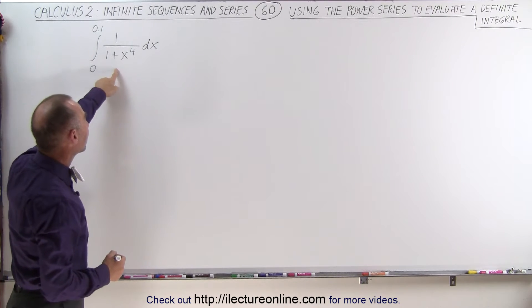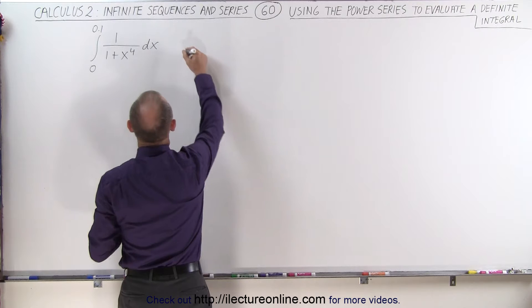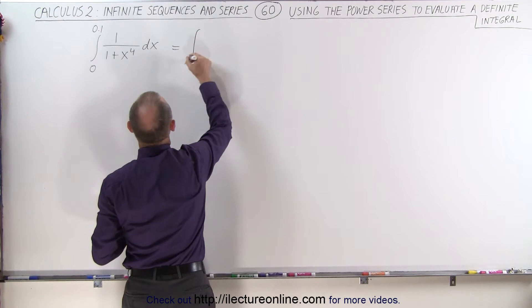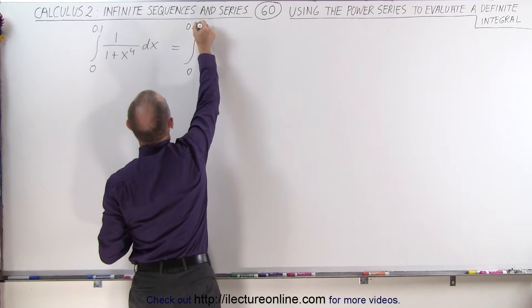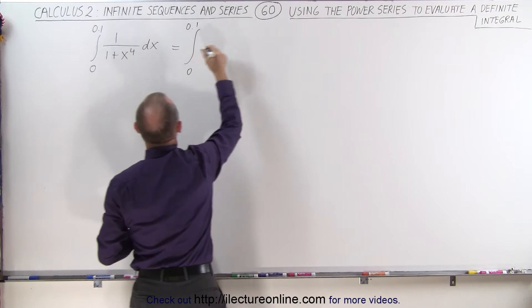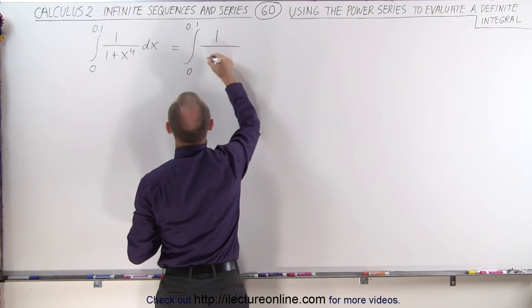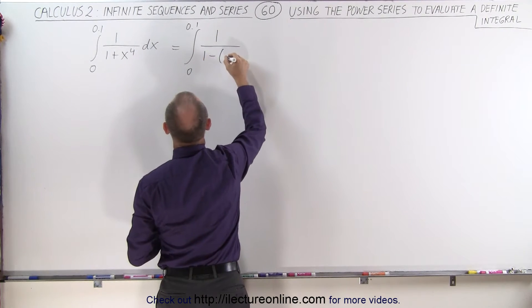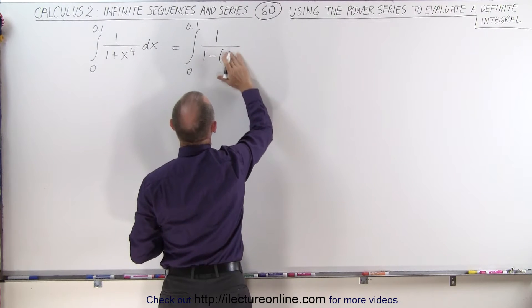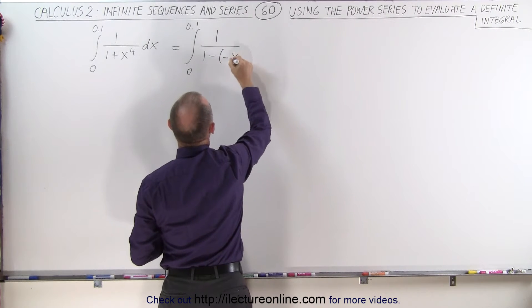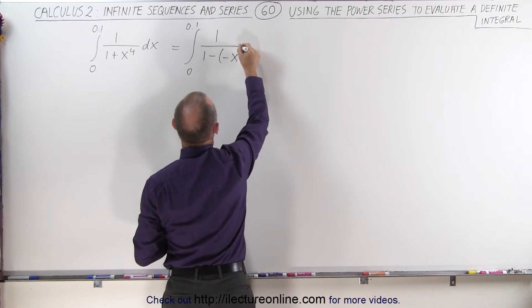So we can see that this could be written as follows. This can be said to be equal to the integral from 0 to 0.1. Instead of writing it like this, we can write it as 1 over 1 minus the quantity negative x to the fourth, like this.